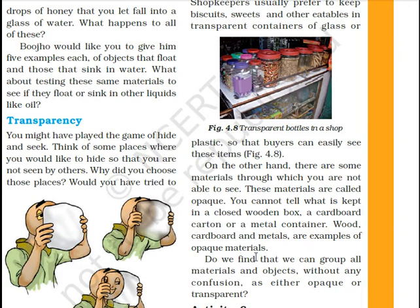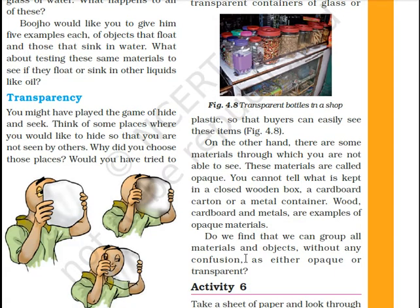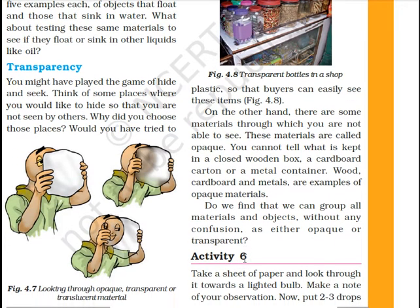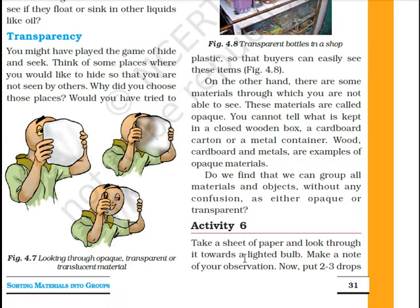Another homework: write two headings — 'Transparent materials' with five examples, and 'Opaque materials' with five examples. Now for Activity 6: take a sheet of paper and look through it towards a lighted bulb. Make a note of your observation.